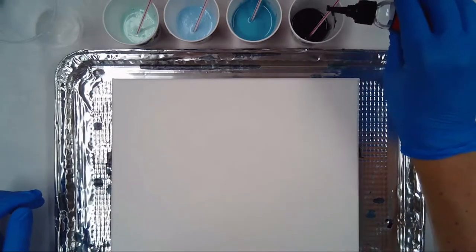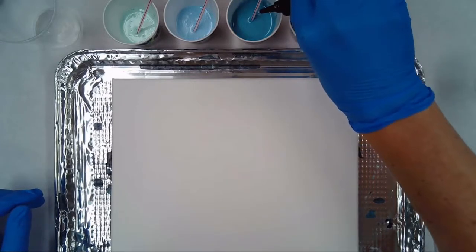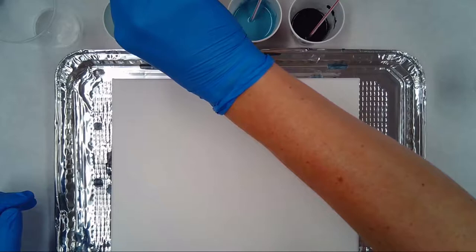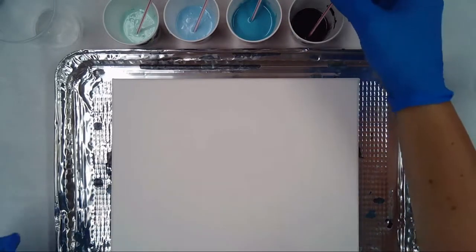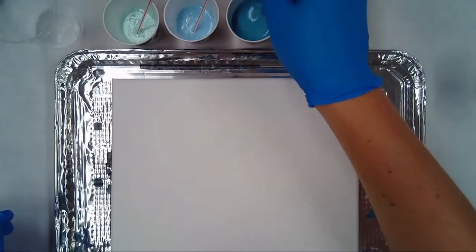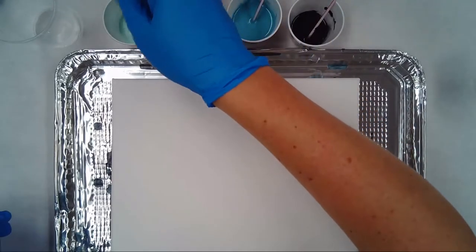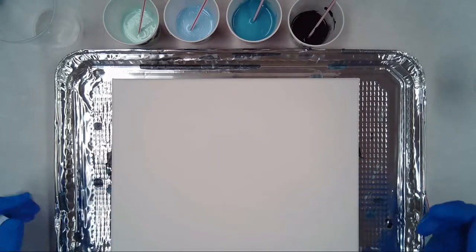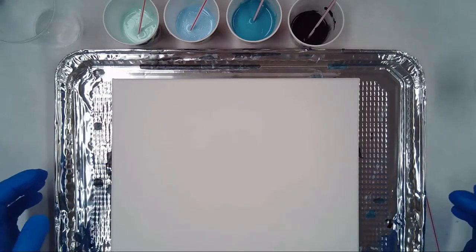So we're going to add a drop to each paint color. And we're also going to be doing a different style of pour. This would still be considered a dirty pour, but this one's called a flip cup. So rather than actually pouring it onto the canvas, we're going to put the cup right on the canvas and then lift it and let the paint flow.